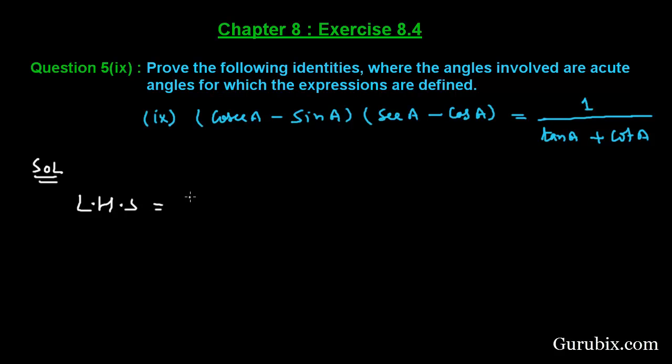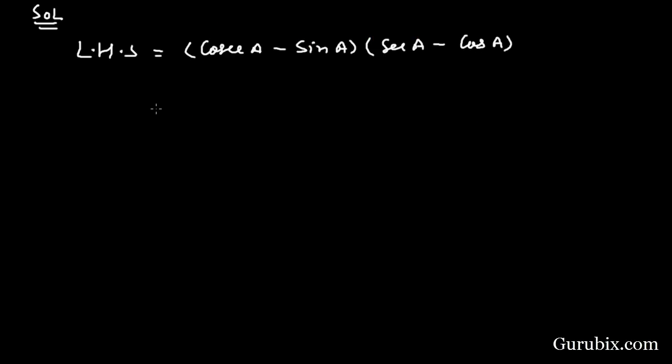The left-hand side is given as cosec A minus sin A times sec A minus cos A. Now we can write cosec A like this: 1 over sin A, because cosec theta equals 1 over sin theta. And here we have sin A over 1. In the second bracket we have sec A, which can be written as 1 over cos A, and here we have cos A over 1.